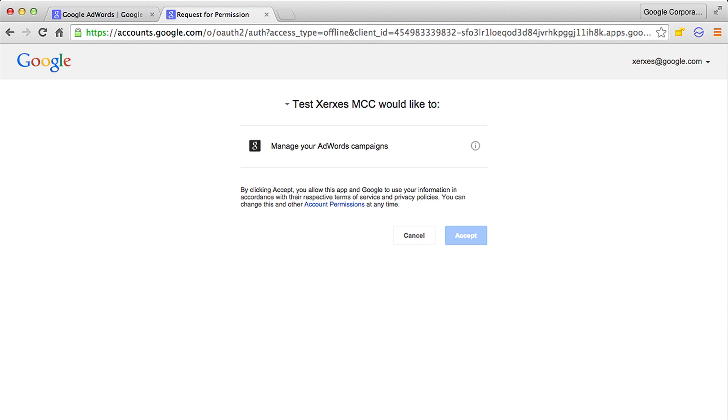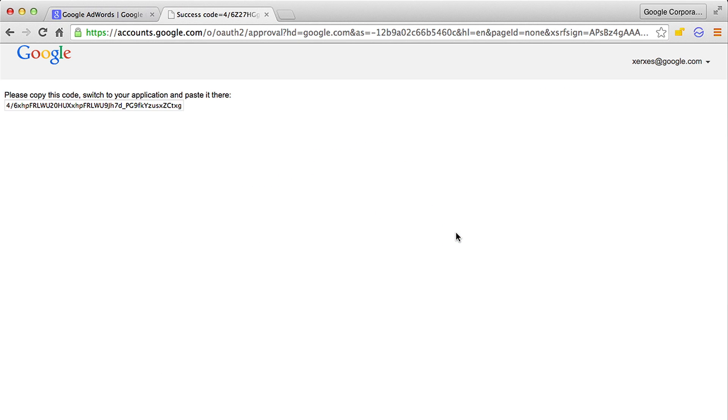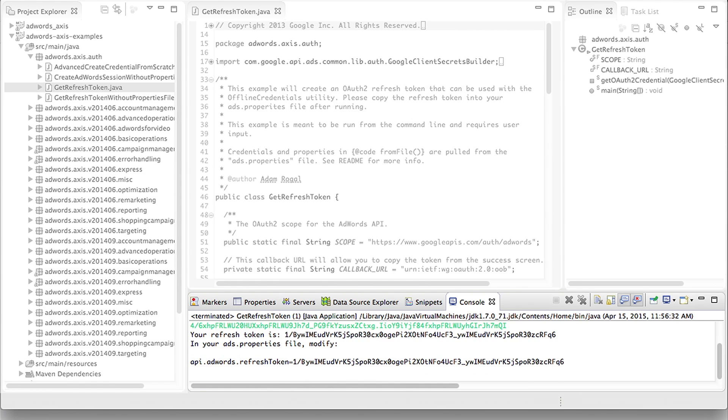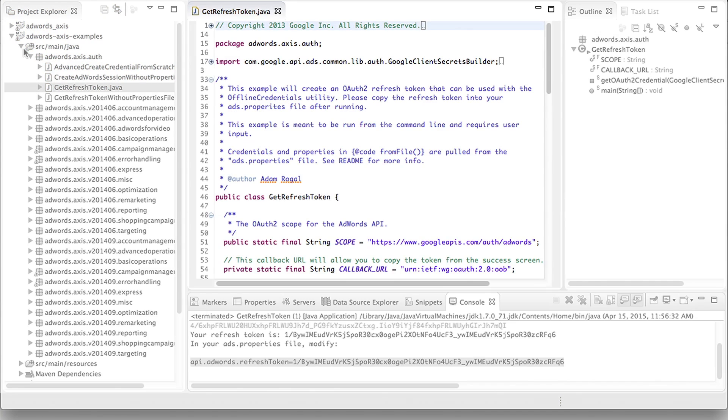Then, copy that URL into the browser. Click Accept and copy the code back into the Eclipse console where prompted. The console will then print a refresh token. Copy that into the ads.properties file.